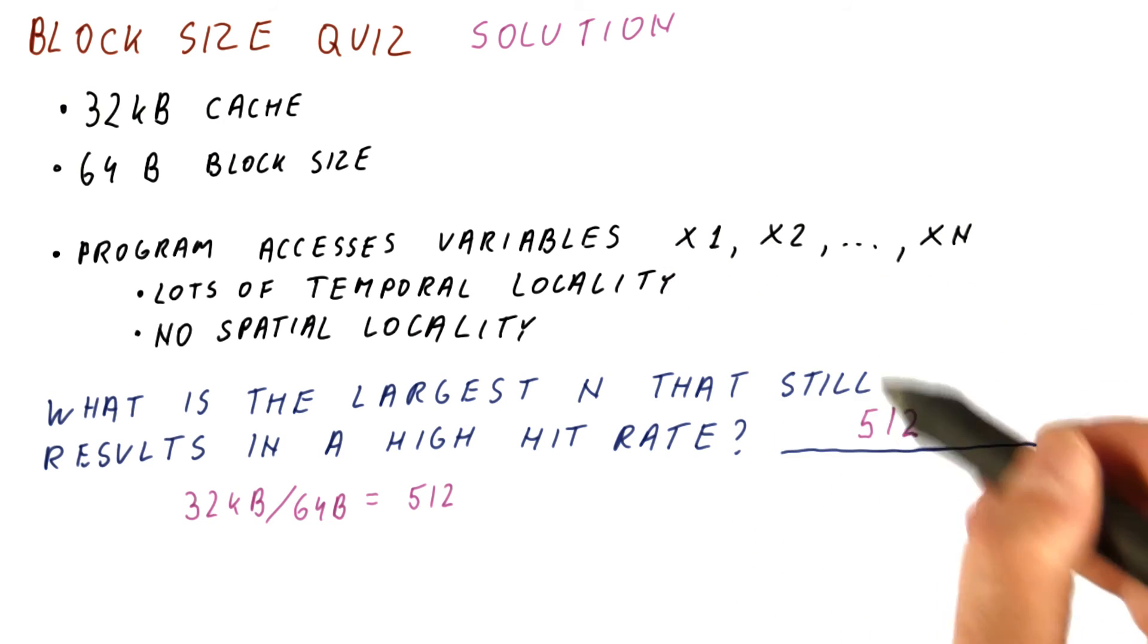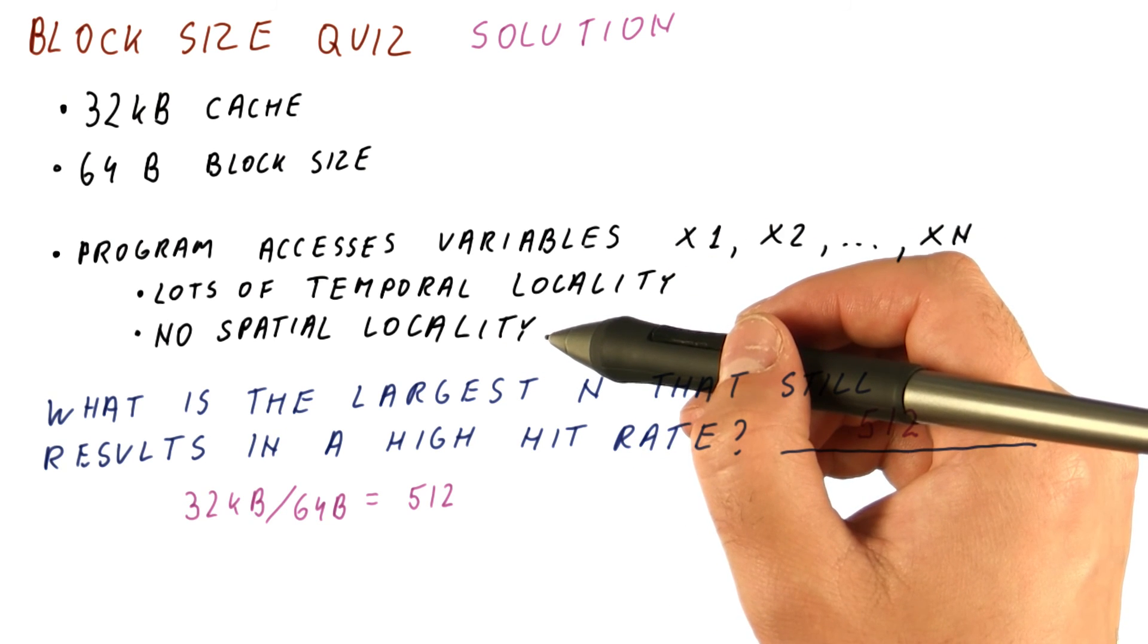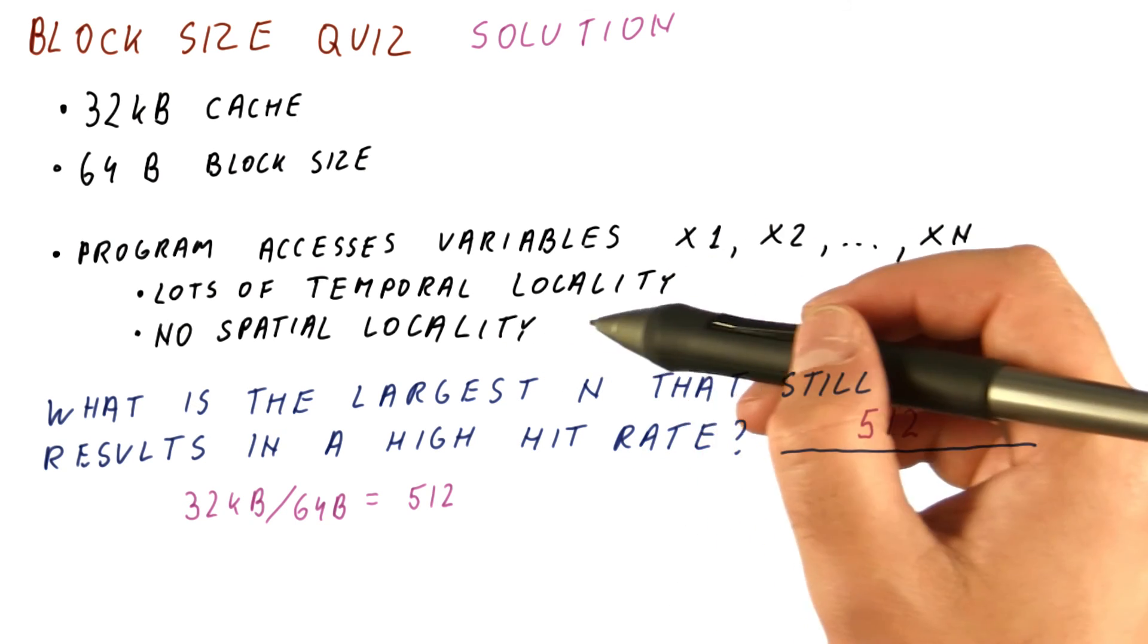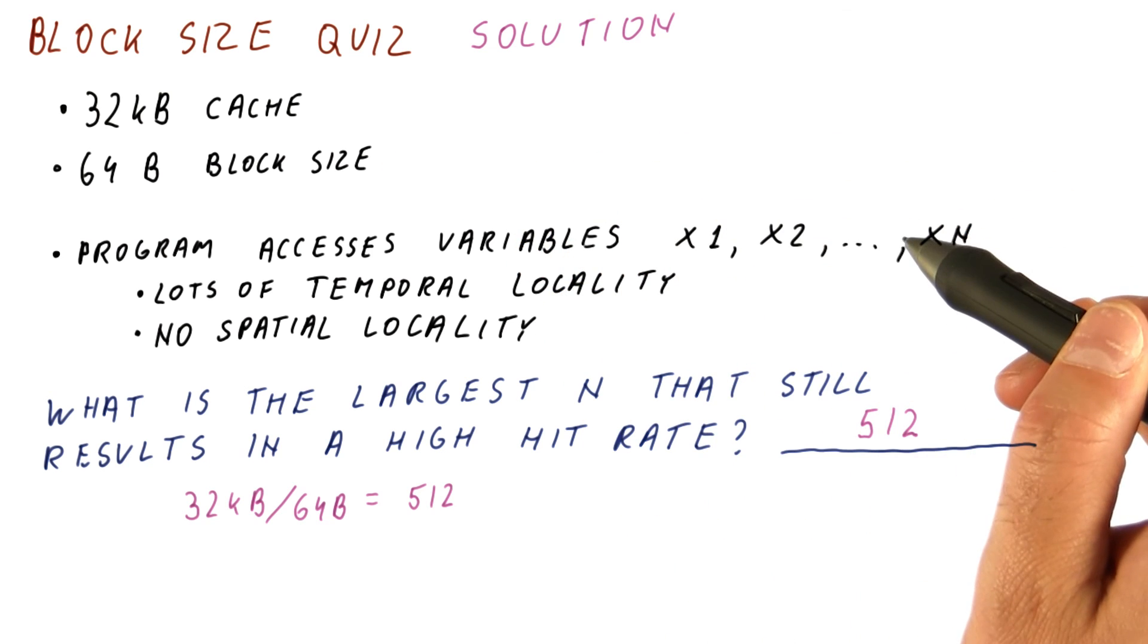In order to be able to have more variables than this, we really need them to be close to each other so that we can benefit from spatial locality. Meaning that a block we fetch for one variable needs to include some of the other variables.